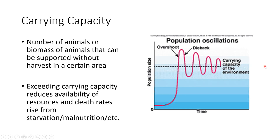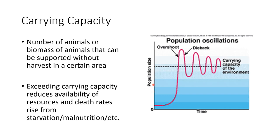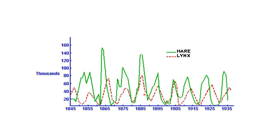The carrying capacity isn't constant — it can change throughout the year based on resource availability, and over time due to climate change or habitat destruction. Human actions can cause this dotted line to shift up or down. A related example is the hare and lynx predator-prey cycle, where as the hare population rises the lynx population follows, which then drives the hare population back down — a back-and-forth oscillation related to but not identical to carrying capacity.